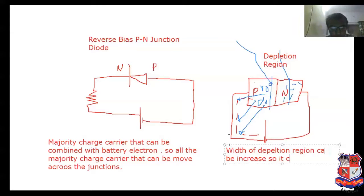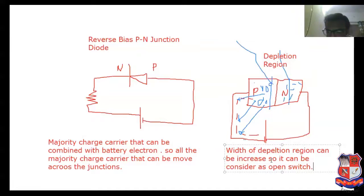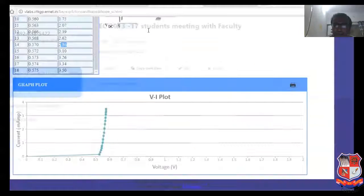So it can be considered as an open switch. The majority charge carrier and the electron combine — the electron and the majority charge carrier (hole) combine — so this is the depletion region. It is the concept related to reverse bias PN junction diode, and it is the complete explanation.